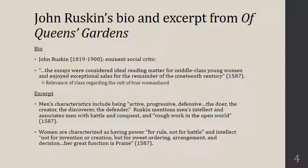The particular collection from which Of Queen's Gardens comes had essays that, according to the Norton Anthology from which these page numbers are taken, were considered ideal reading matter for middle-class young women and enjoyed exceptional sales for the remainder of the 19th century, meaning after they were published in the 1860s. This is really important because you're getting a sense of the audience for the text that you read, and also the fact that the audience was supposed to learn from Ruskin's text — to become educated and enculturated into the gender norms they were supposed to be following.